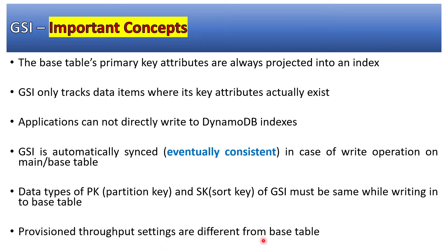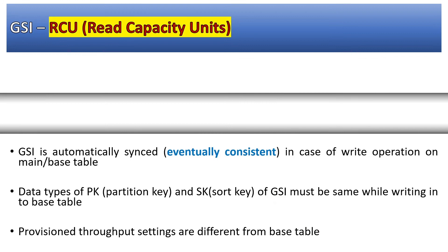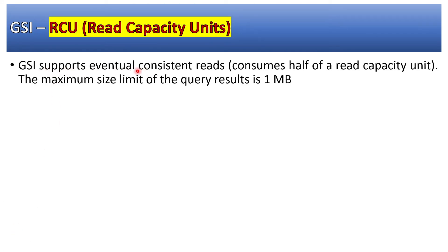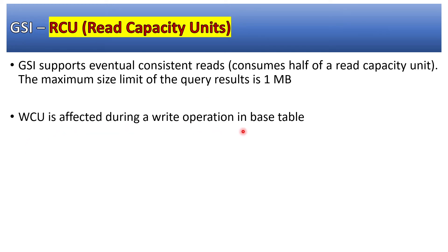Provisioned throughput settings for a GSI are different from the base table. GSI supports eventually consistent reads, which consumes half of a read capacity unit. The maximum size limit of a query result is 1 MB — it cannot return more than 1 MB of data. This is very important because it can lead to application failures if you are expecting more than 1 MB to be returned by the server-side APIs.